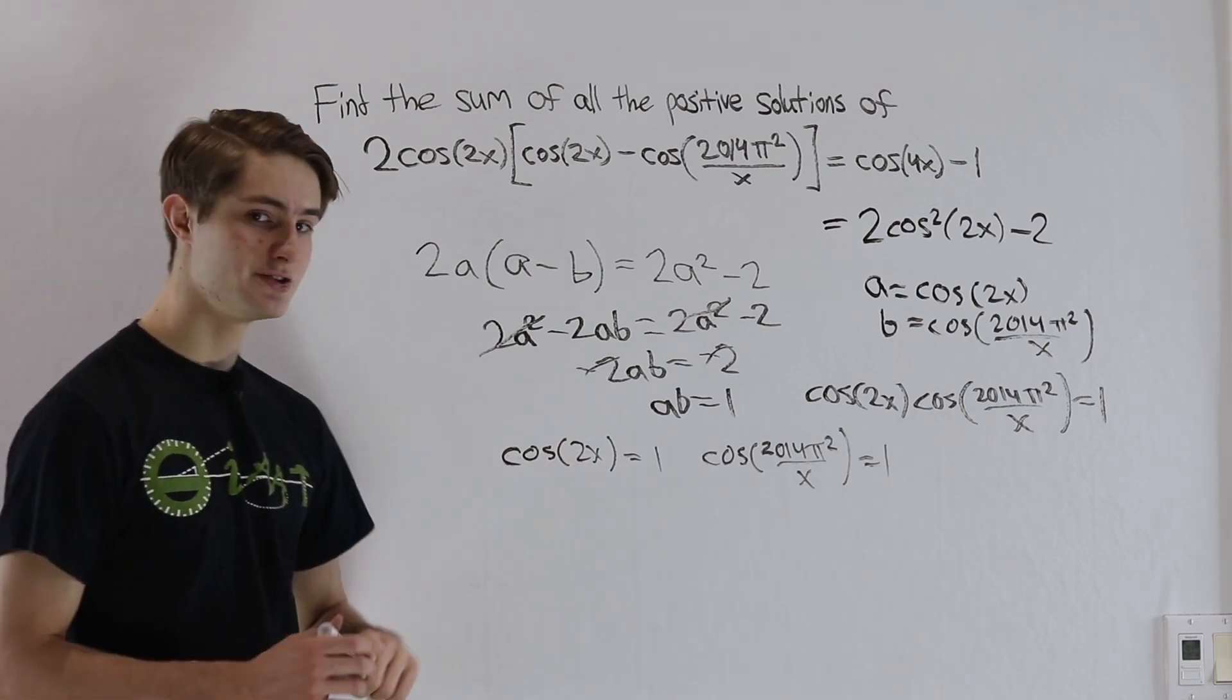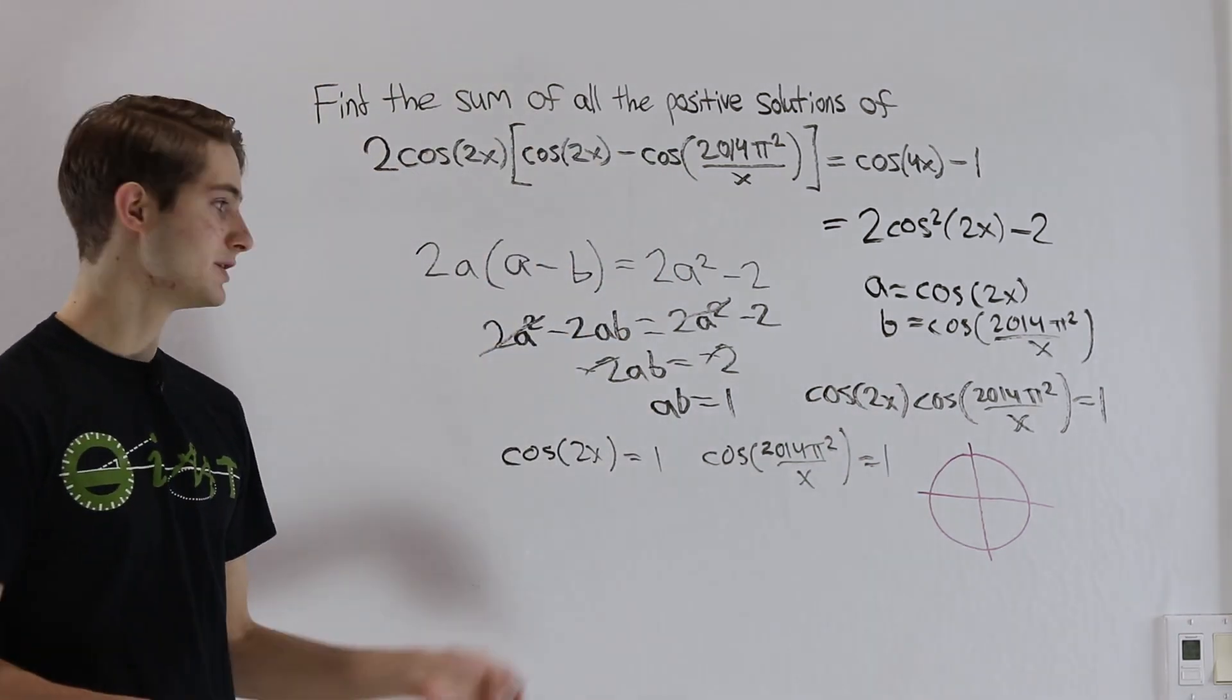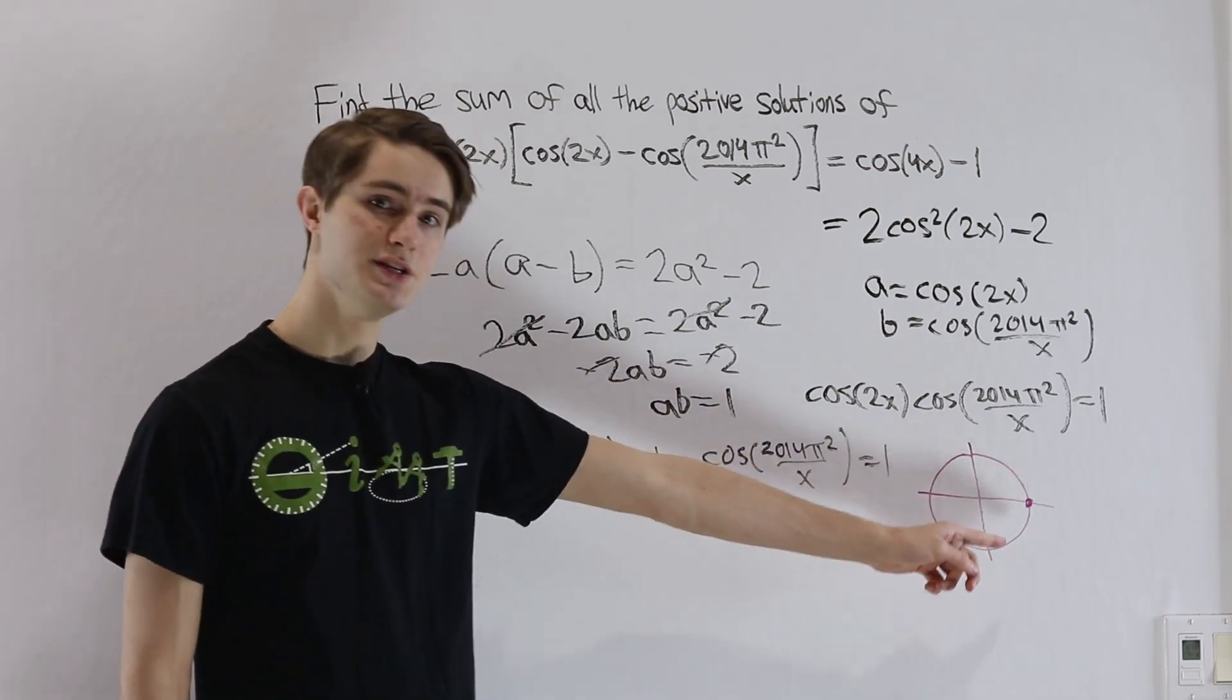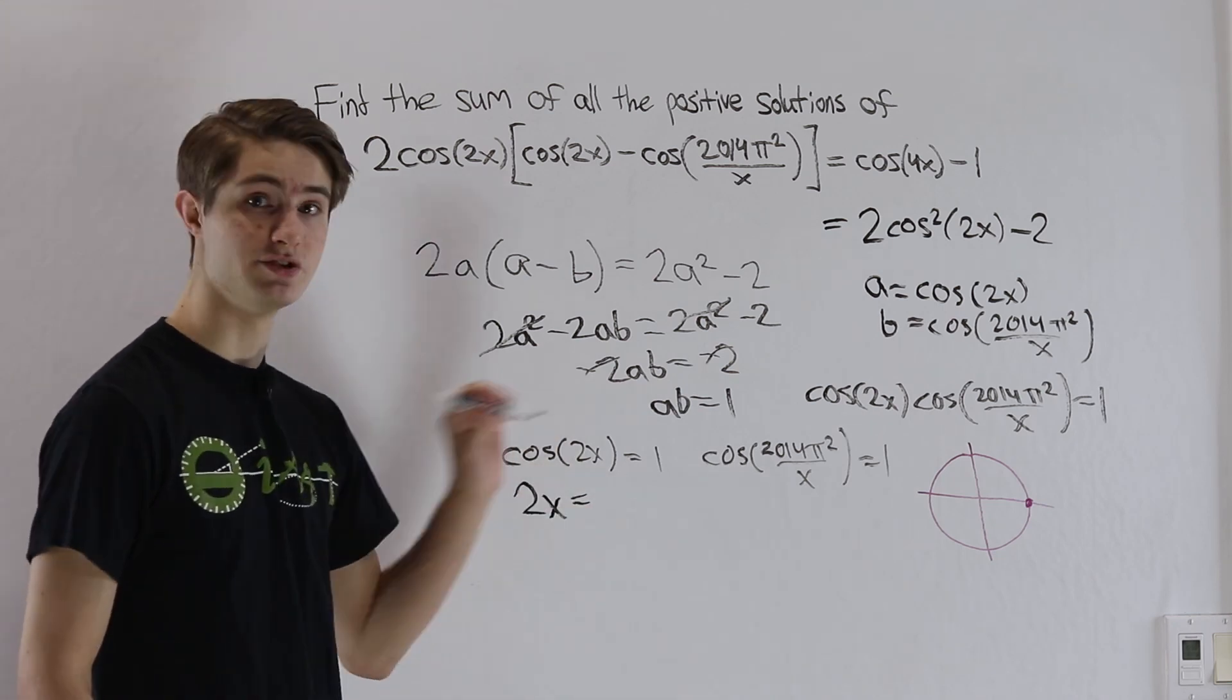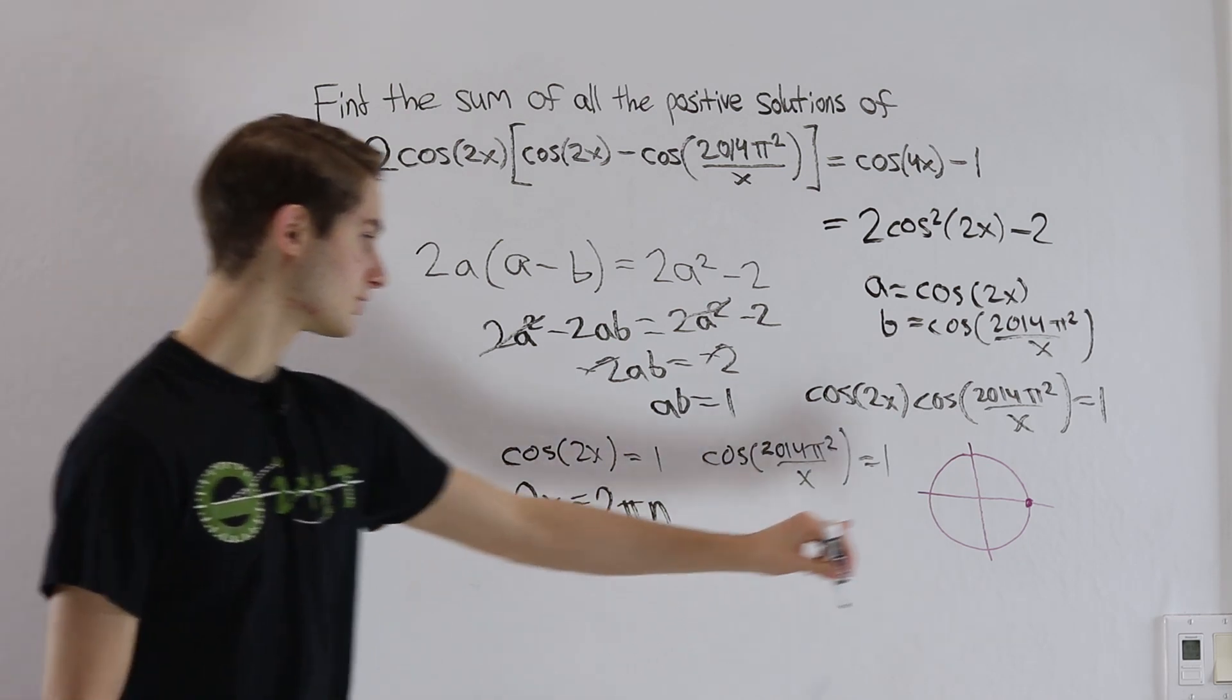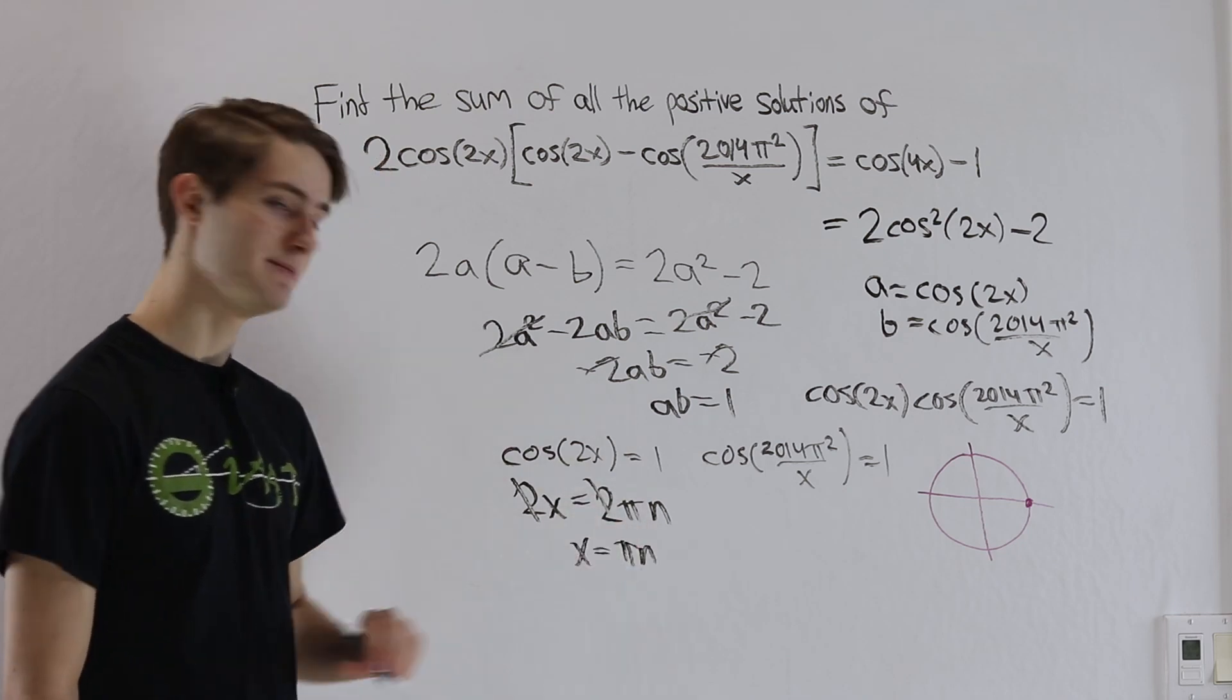If we want cosine of 2x to equal 1, let's take a look at what the graph of the cosine looks like. If we have a unit circle like this, remember the cosine is going to be the x value on that unit circle. So if we want the x value to equal 1, that's only going to happen at this point right here. This point happens when our angle is equal to 0. In this case, our angle is 2x, which means we're going to set 2x equal to just 0. But remember, we can also go a full rotation around the circle, which would be 2π, and then any number of times. If we went around the circle twice, that would be 2π times 2. We can cancel the 2s on either side and get that x is equal to π times some integer n.